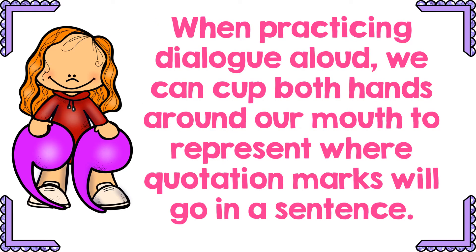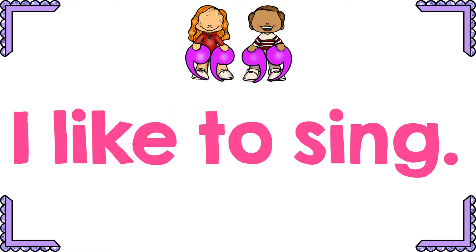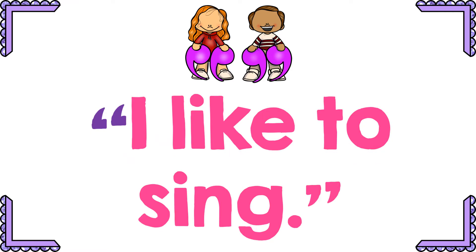When practicing dialogue aloud, we can cup both hands around our mouth to represent where quotation marks will go in a sentence. If you see that someone is saying something in a story, cup your hands around your mouth. You would start where the person starts talking and your quotation marks would end where the person stops talking. Let's practice: I like to sing. Cup your hands around your mouth and repeat that dialogue — I like to sing. We put our quotation marks before the word 'I' and after the word 'sing.' Those are the exact words coming out of someone's mouth — that's their dialogue.